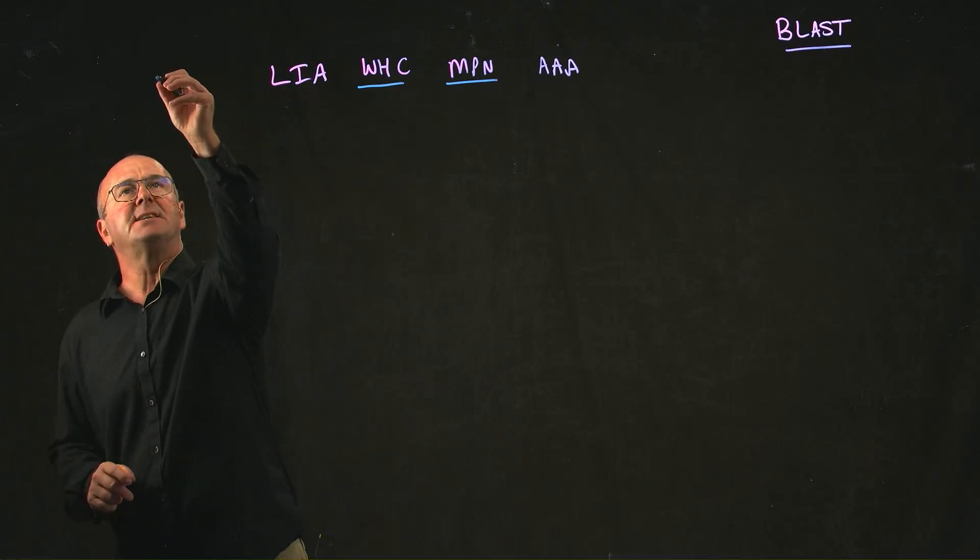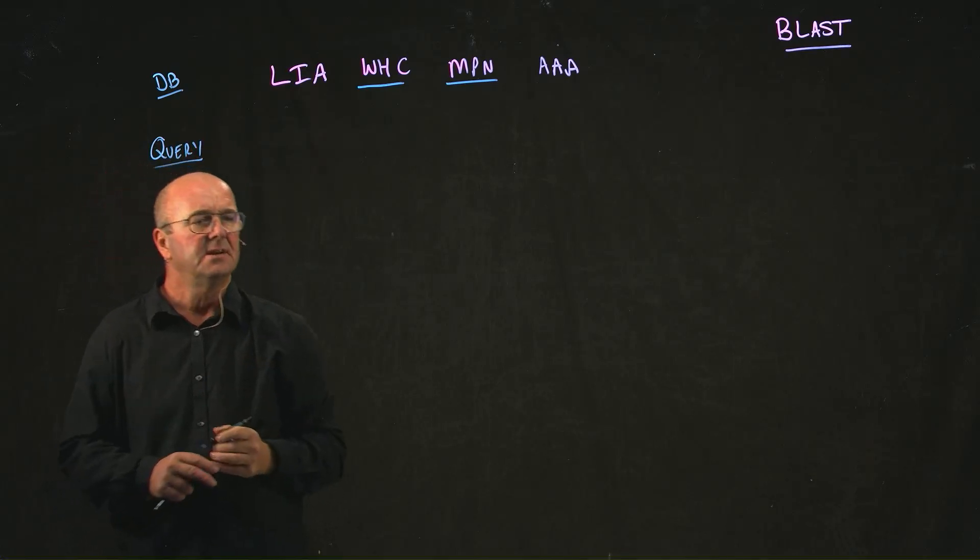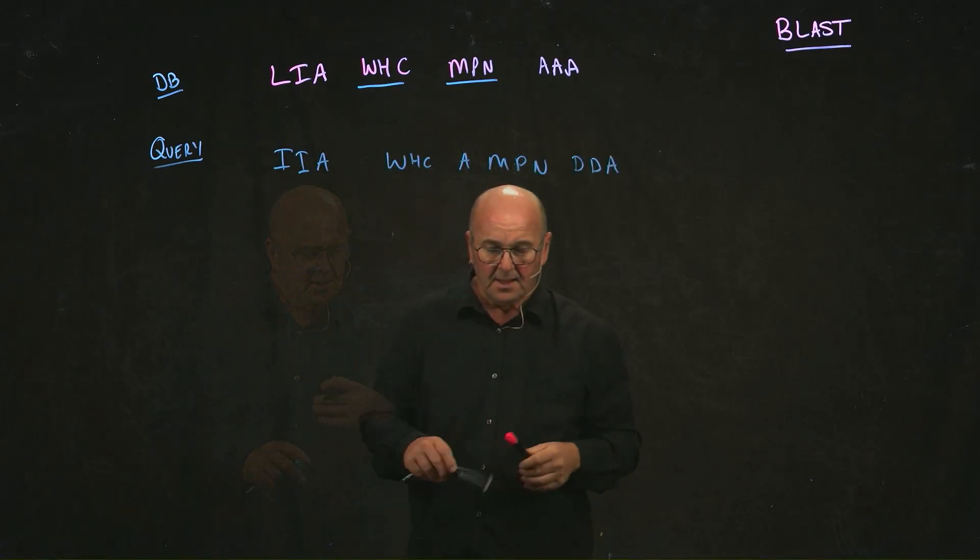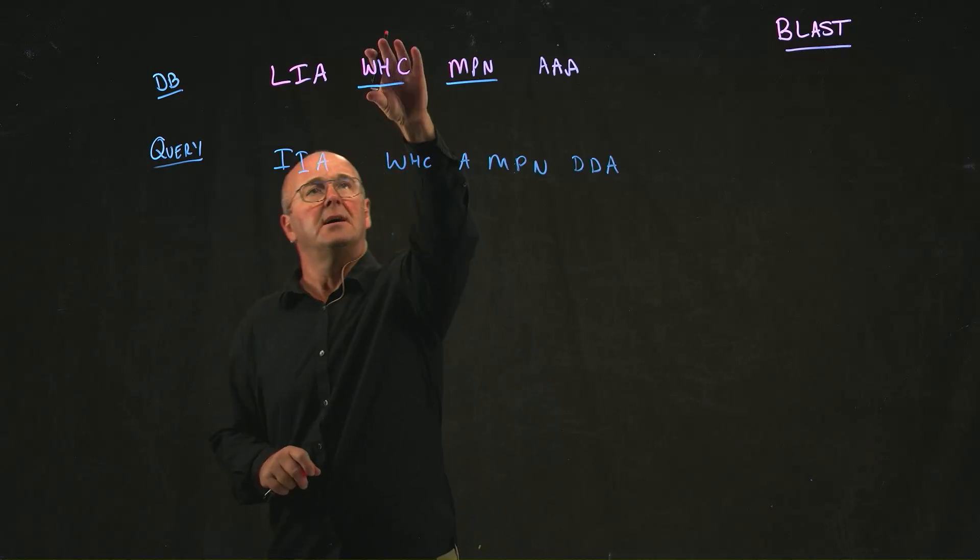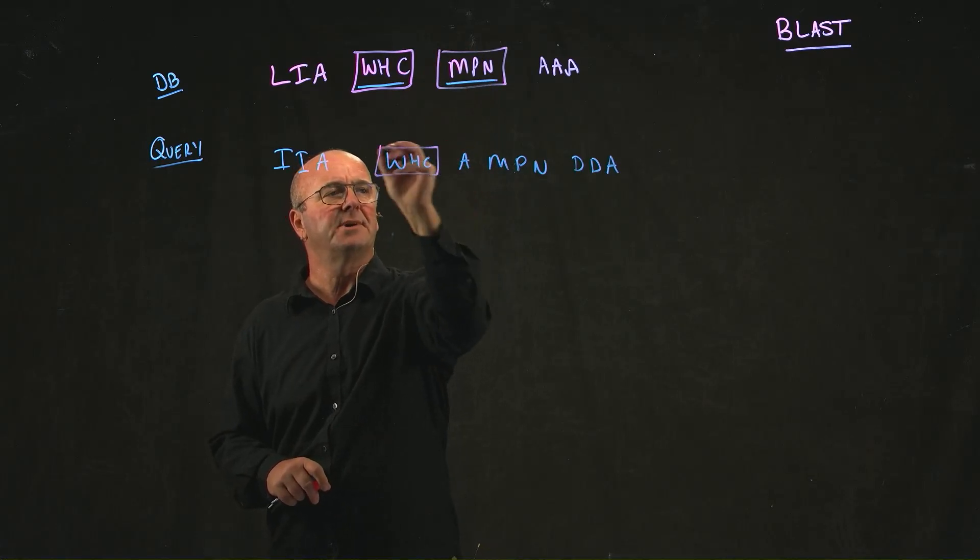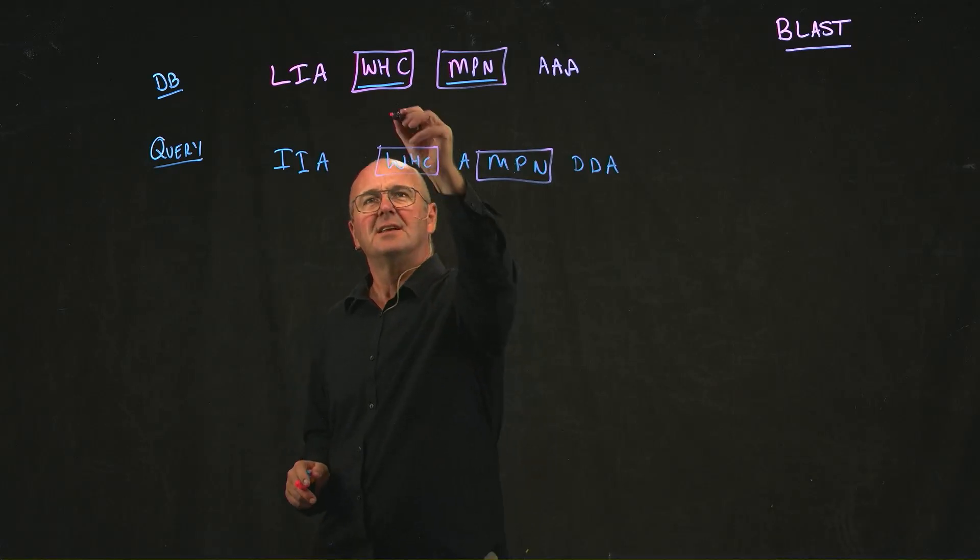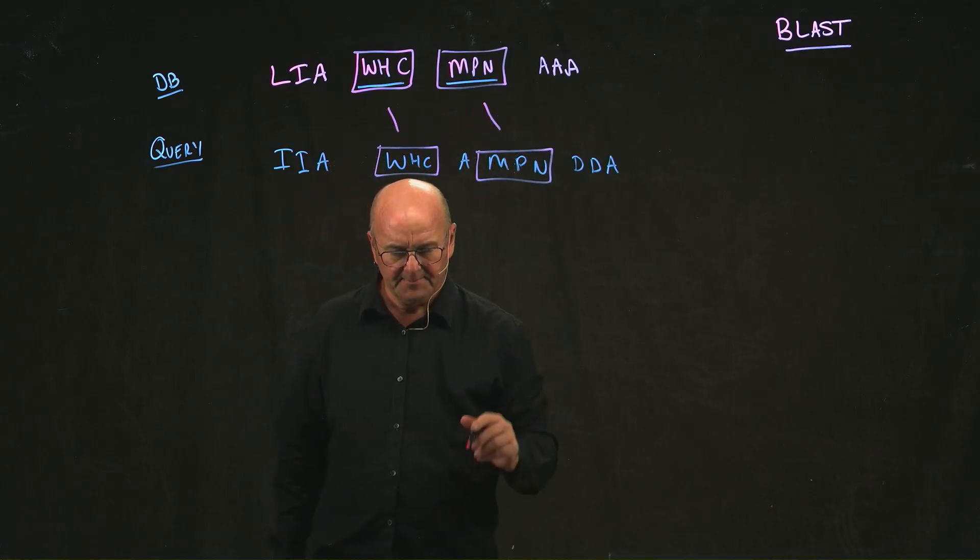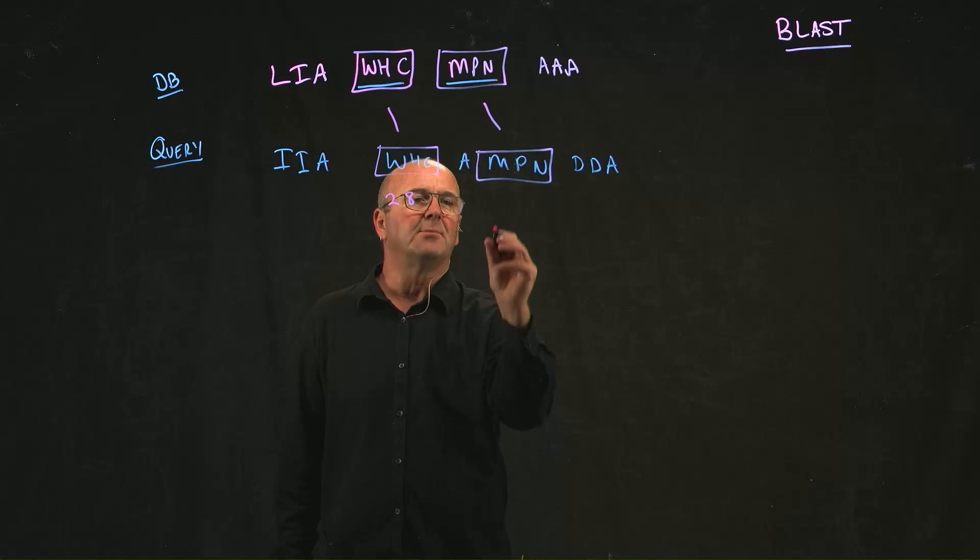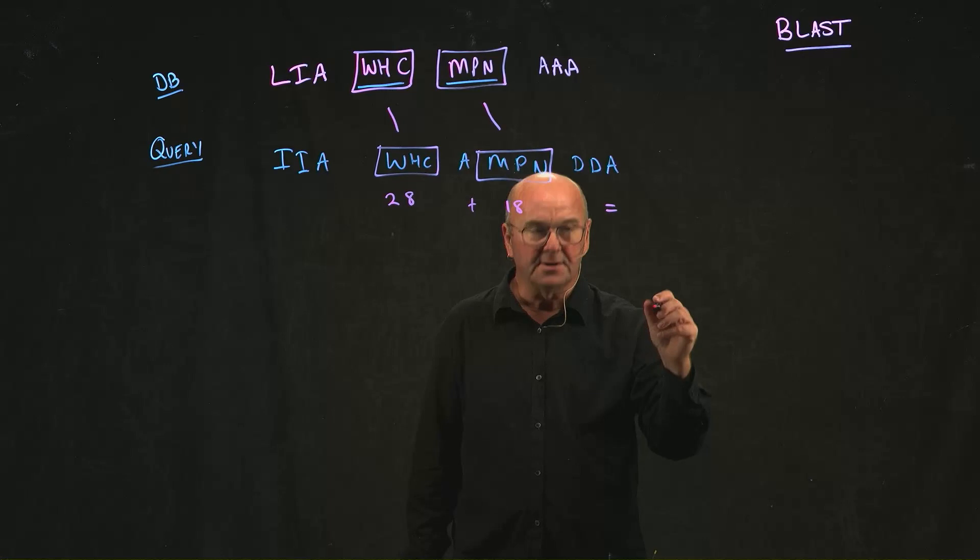So now what I do. So this is my database sequence. And now what I do is I have what I call the query sequence. And the query sequence is the one that we're trying to find a match to. And so I take my query sequence and I've indexed my database. The only words I've kept are WHC and MPN. And lo and behold, not surprisingly because the example wouldn't work if I didn't have those there, then I find those two words.